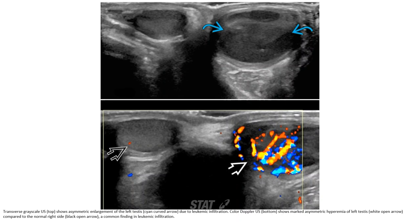This ultrasound shows symmetric enlargement of the left testis due to leukemic infiltration. Color Doppler shows markedly symmetric hypoechoic areas of the left testis compared to the normal right side — a common finding in leukemic infiltration.